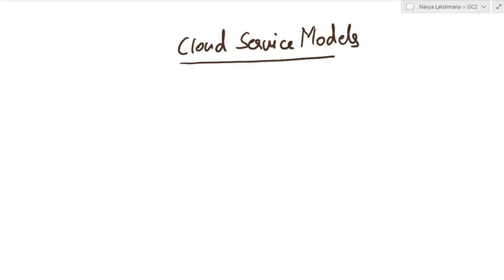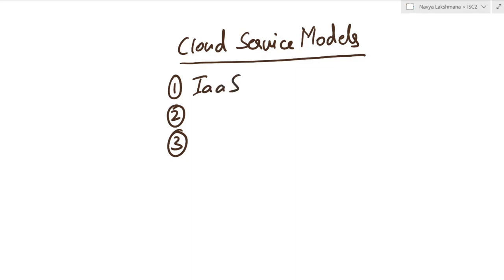Let's talk about the cloud service models. This is based on the services offered by the cloud service provider. There are three types of service models: infrastructure as a service, platform as a service, and software as a service.